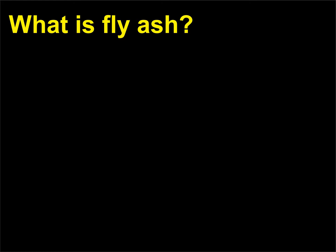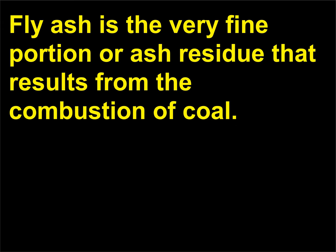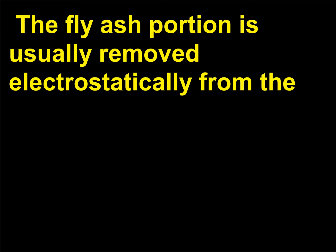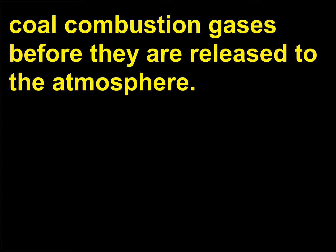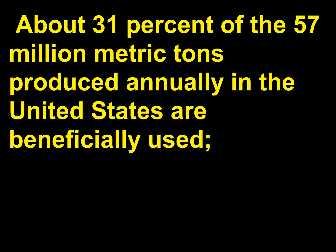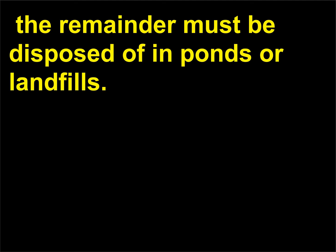What is fly ash? Fly ash is the very fine portion or ash residue that results from the combustion of coal. The fly ash portion is usually removed electrostatically from the coal combustion gases before they are released to the atmosphere. About 31 percent of the 57 million metric tons produced annually in the United States are beneficially used. The remainder must be disposed of in ponds or landfills.